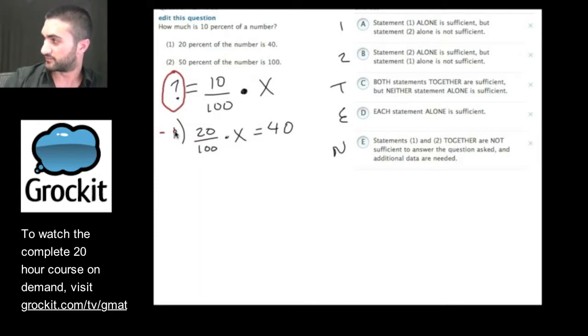This is not a data sufficiency yes-no question, but we don't need to do more math than we need to know to answer their question. Is this enough information to tell us what that is? I think so. This is enough information to let us know. We have an equation here. We can solve for x. We can plug x back in here. What do we get rid of? If 1 is sufficient, we can get rid of 2, T, and N.